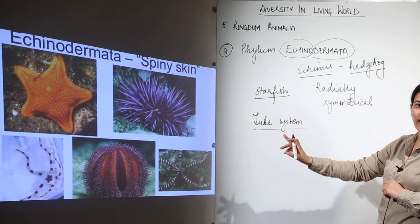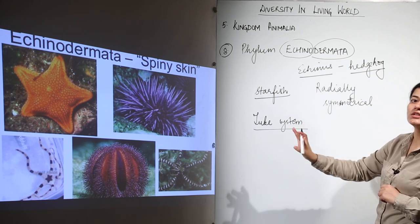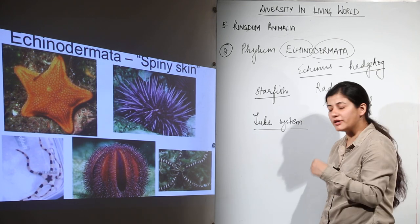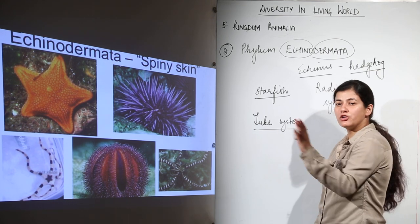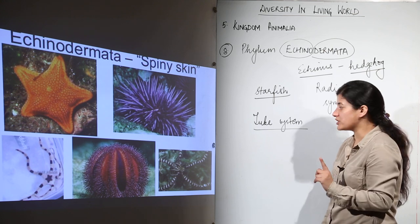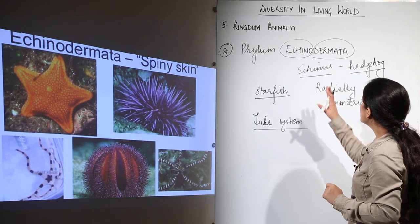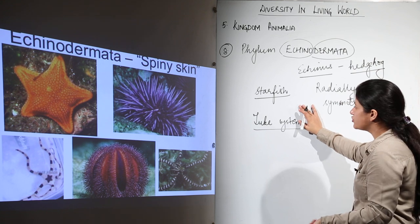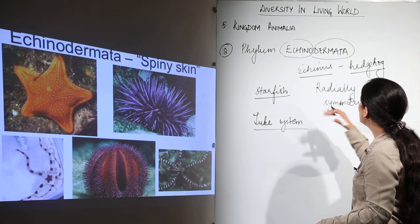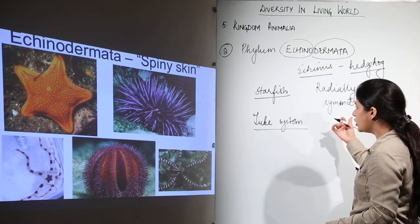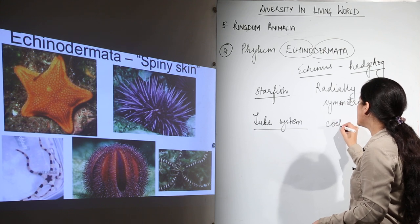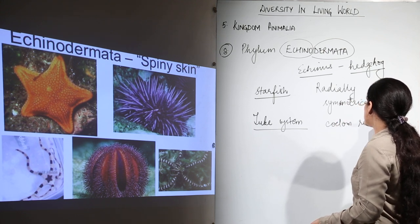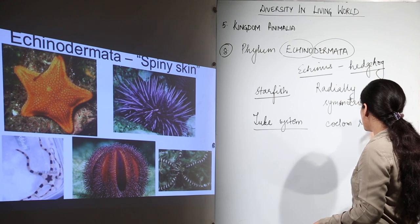This one phylum is exclusively marine — all organisms are found in marine conditions; you would not find them in fresh water. They have a tube system, a radially symmetrical body, and a triploblastic nature. They have a coelom, though the coelomic cavity is reduced.